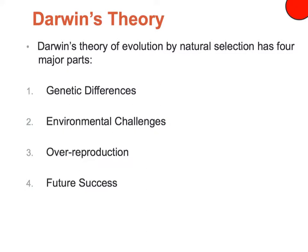The last part is future success. Those individuals that have traits that are favored are going to reproduce, create more individuals with those traits, and they're going to basically continue to be selected by the environment. We're going to look at each of these in a moment.